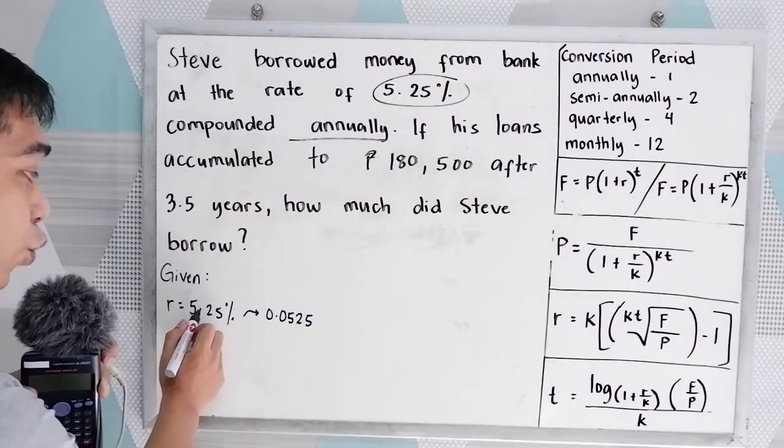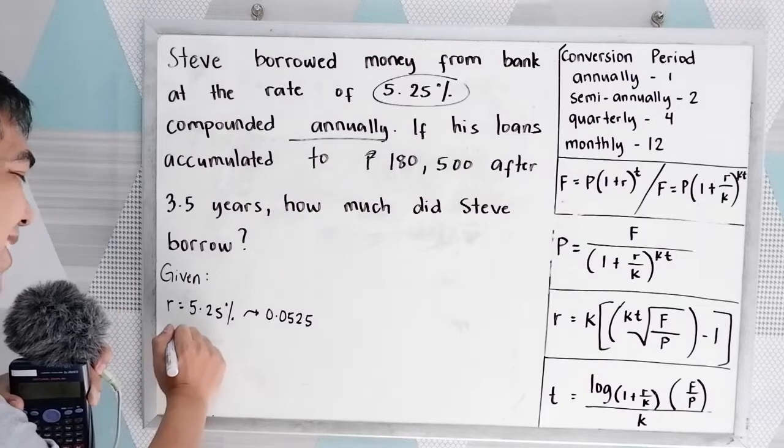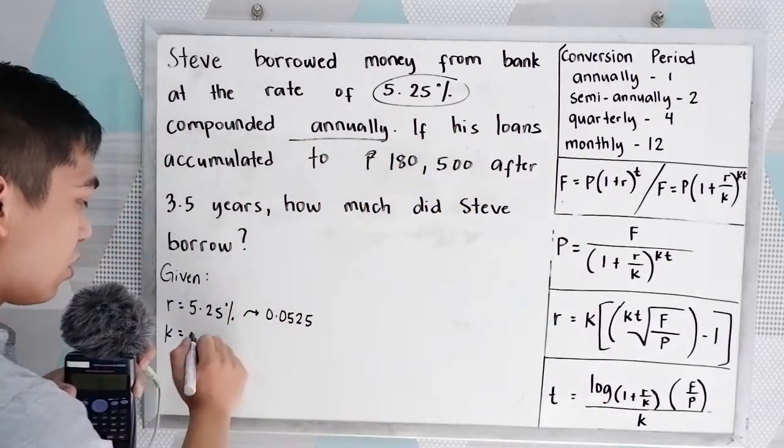Let's move twice to the left. And compounded annually, that is our K, annually, so 1.